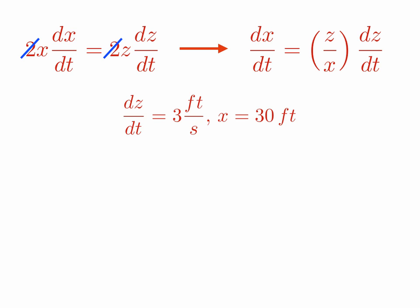So what's the given information? Well, we're trying to solve this equation at the instant that dz/dt is equal to 3 feet per second and at the instant that x is equal to 30 feet. And I say at the instant dz/dt is equal to 3 feet per second because that might change, but we're doing it exactly when x is equal to 30 feet.